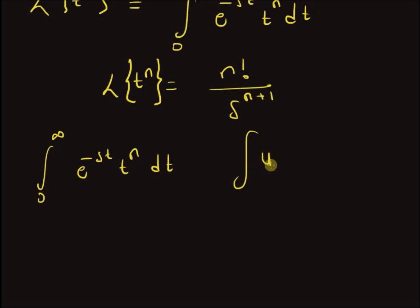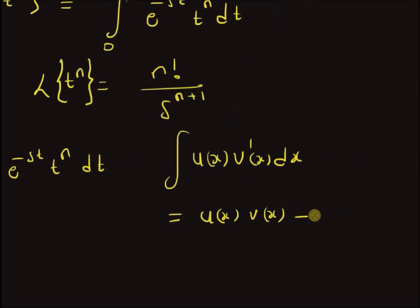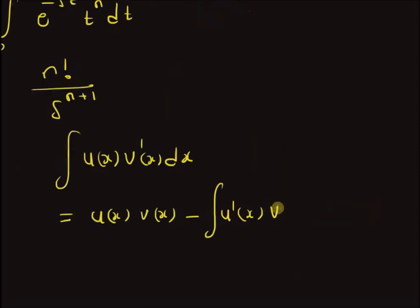The integration by parts formula states: for a function u(x) multiplied by a derivative v'(x), the integral of this product equals u(x)·v(x) minus the integral of u'(x)·v(x) dx. This is the formula for integration by parts that we will use.